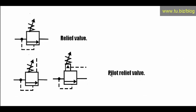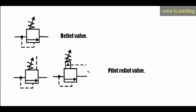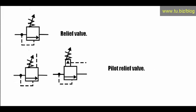Next we have a pilot relief valve. It is basically the same as a relief valve, but it has the option of a pilot. The pilot is drawn as a dash line coming directly from the body of the relief valve, or you can draw the pilot with a box containing a triangle and a dash line coming out of that box. That is a pilot relief valve.